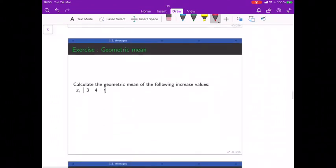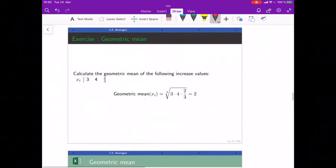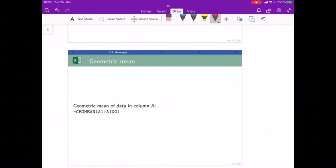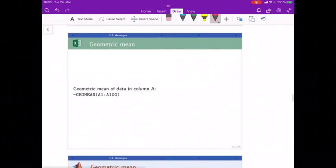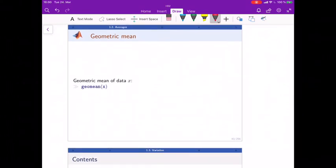Just have a quick go at it so you remember. Calculate it for this small data set here. Exactly. So multiply the numbers, 3 numbers, so third root, and result is 2. Excel has the function geomean and MATLAB it's called geomean as well. Brilliant. All right now.